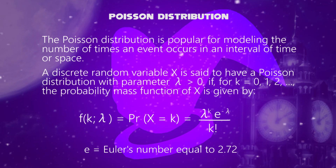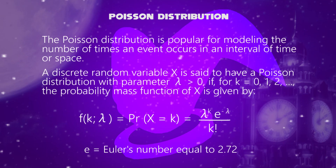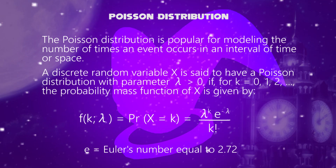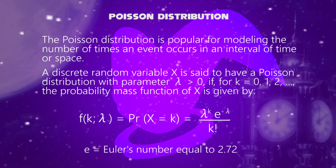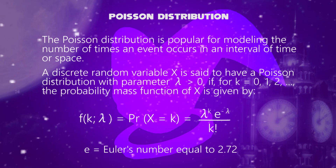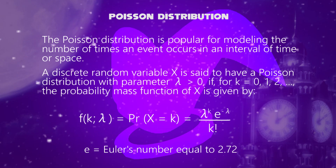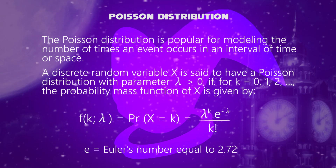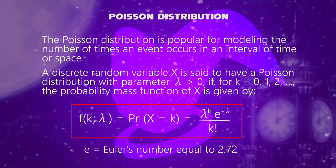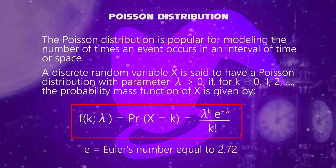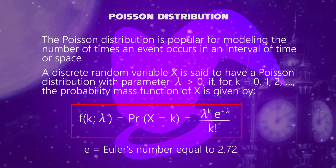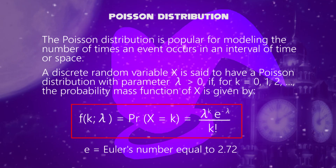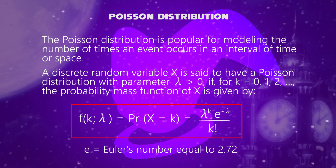The Poisson Distribution is popular for modeling the number of times an event occurs in an interval of time or space. A discrete random variable x is said to have a Poisson Distribution with parameter lambda greater than zero, if, for k equals zero, one, two, and so on, the probability mass function of x is given by: f of k and lambda equals the probability of x equals k, equals lambda to the k exponent times e to the exponent minus lambda, divided by k factorial.